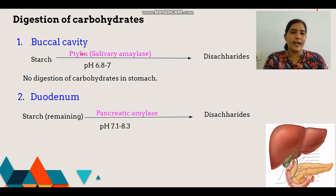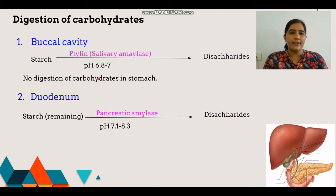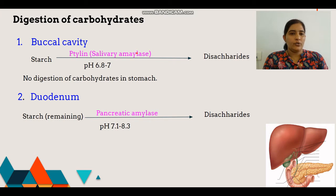Food then moves into the pharynx and esophagus, where there is no digestion of carbohydrates. After that, food enters the stomach. In the stomach, there is secretion of HCl, making the medium acidic. In this acidic medium, the salivary amylase activity stops, so there is no carbohydrate digestion in the stomach.